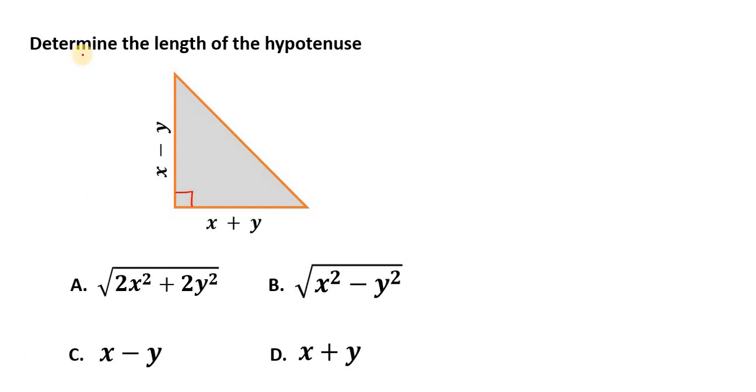In this video, we are asked to determine the length of the hypotenuse. The hypotenuse is the longest side in a right-angled triangle. A right-angled triangle is a triangle with 90 degrees as one of the angles.